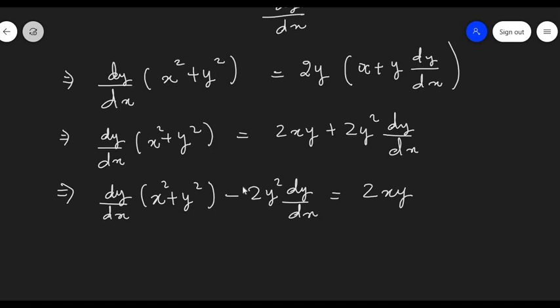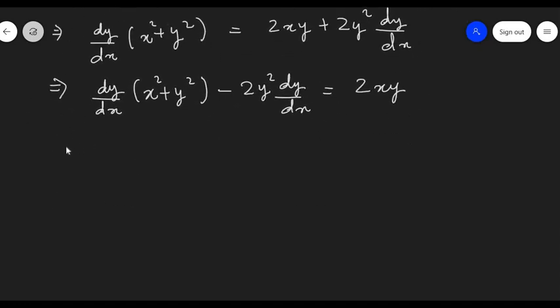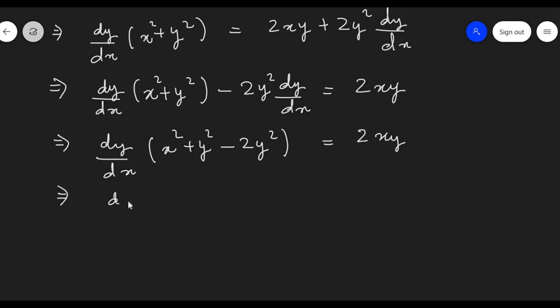Let us take dy/dx common on the left hand side. So, I am going to get (dy/dx)(x² + y² - 2y²) = 2xy. Here, we have got y² and -2y², so I am going to be left with only -y².